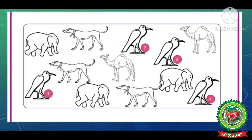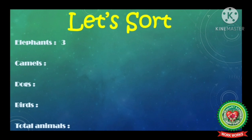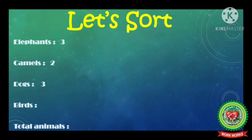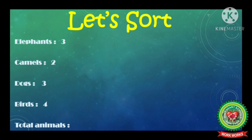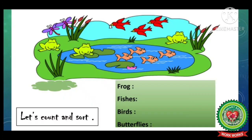Now we have observed all the animals. Let us sort. For sorting we have to make columns: elephants, camels, dogs, birds, and total number of animals. There were 3 elephants, so we will write 3. There were 2 camels, so we will write 2. Dogs were 3, so we will write 3. There were 4 birds, so we will write 4. And how many animals were there in total? 12.